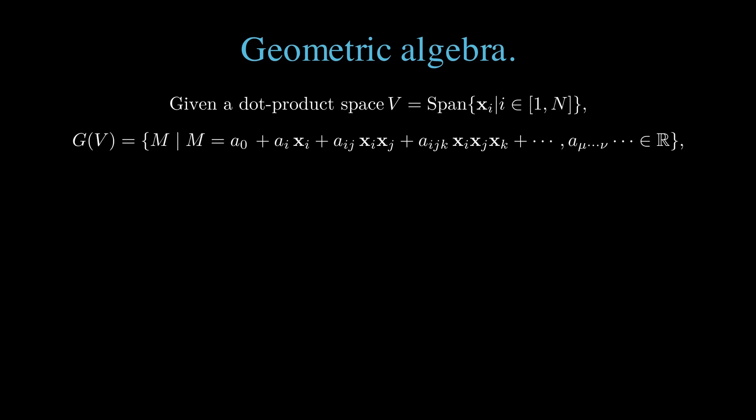A geometric algebra is said to be generated from a vector space that has an associated dot product, i.e. a dot product space. Given a dot product space V spanned by n elements x_i, the geometric algebra G(V) for that space is in fact a vector space where all the elements, called multivectors,